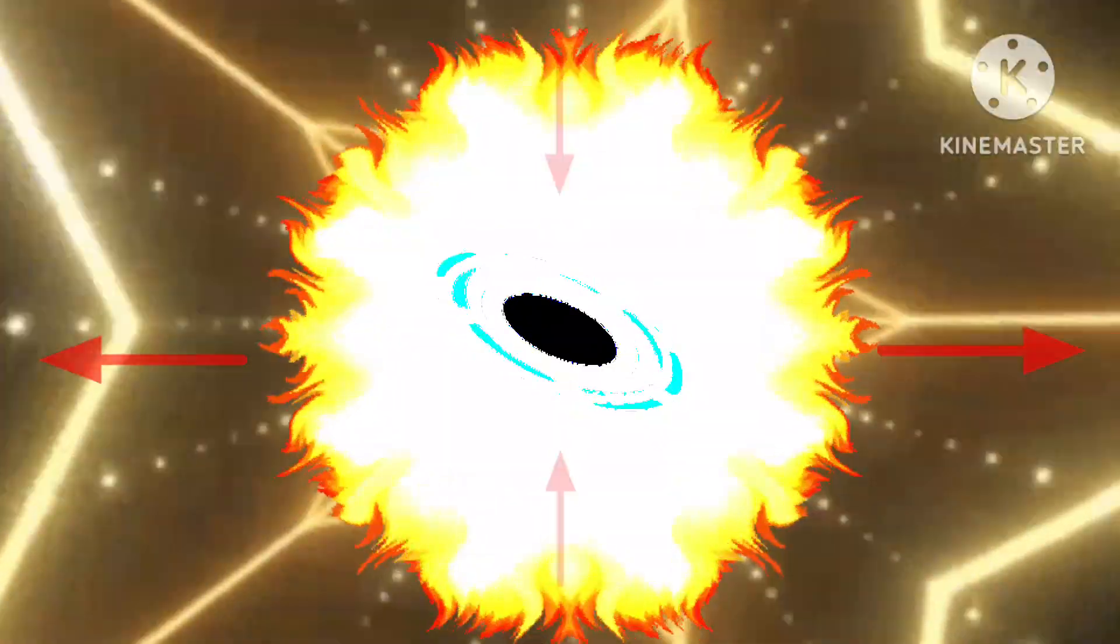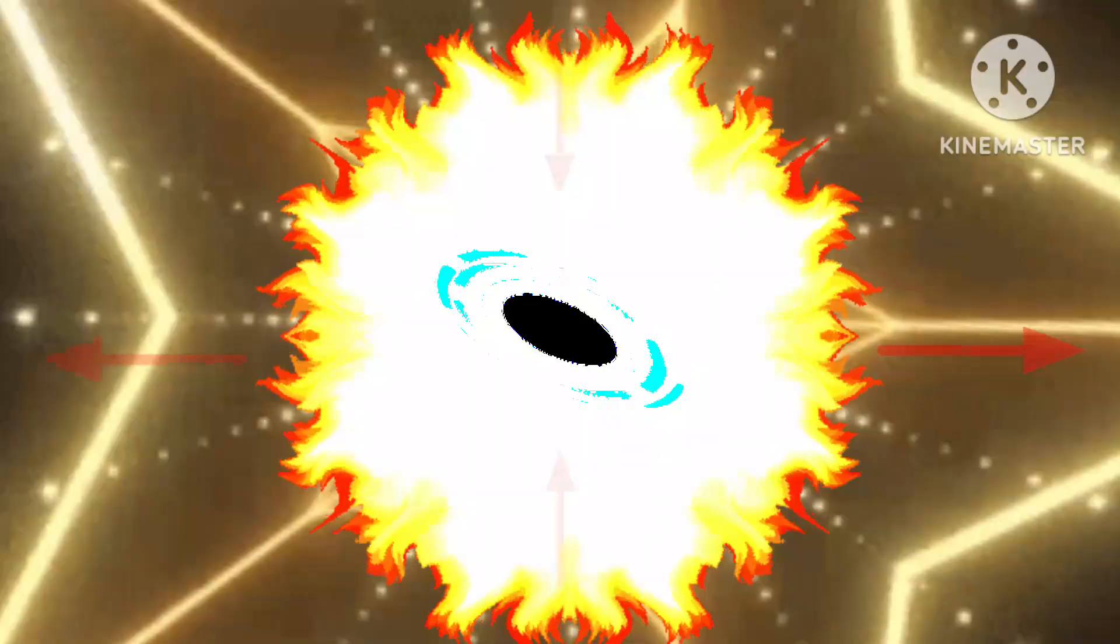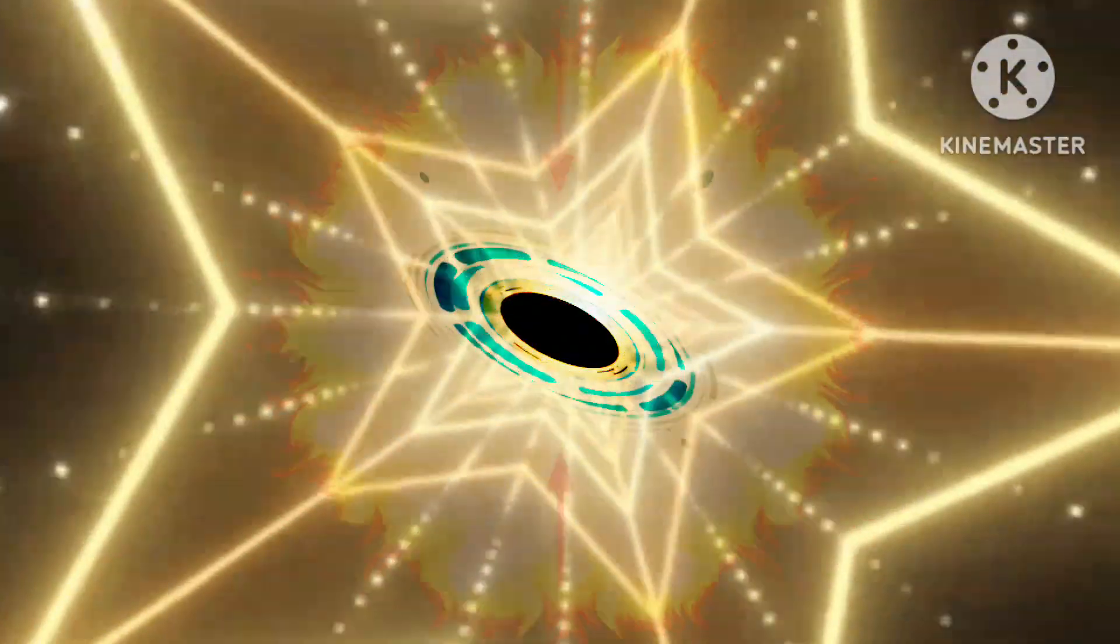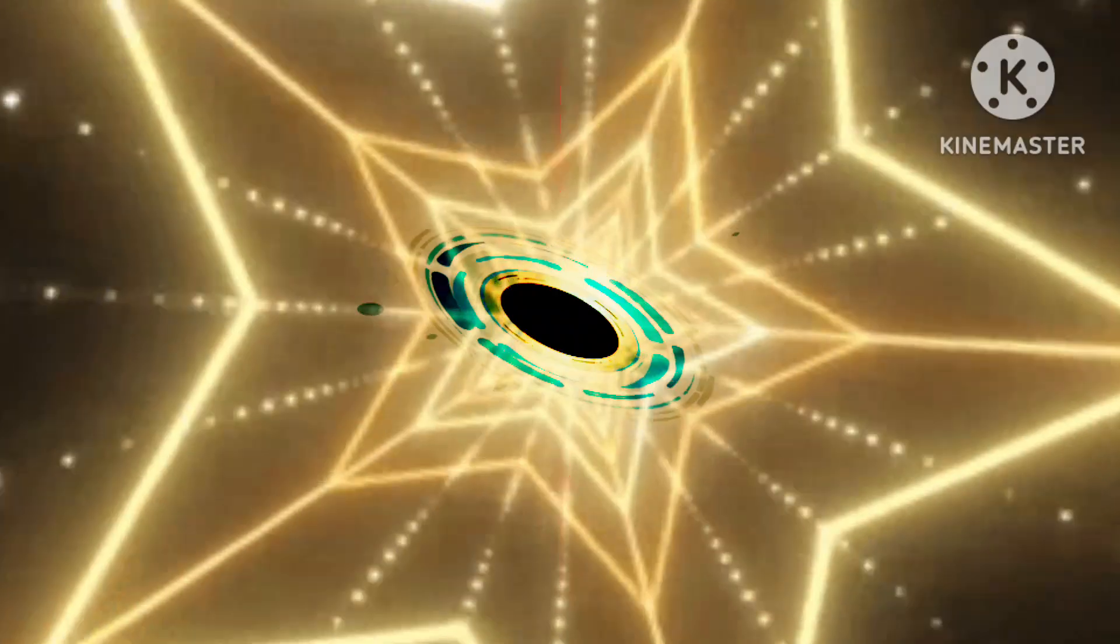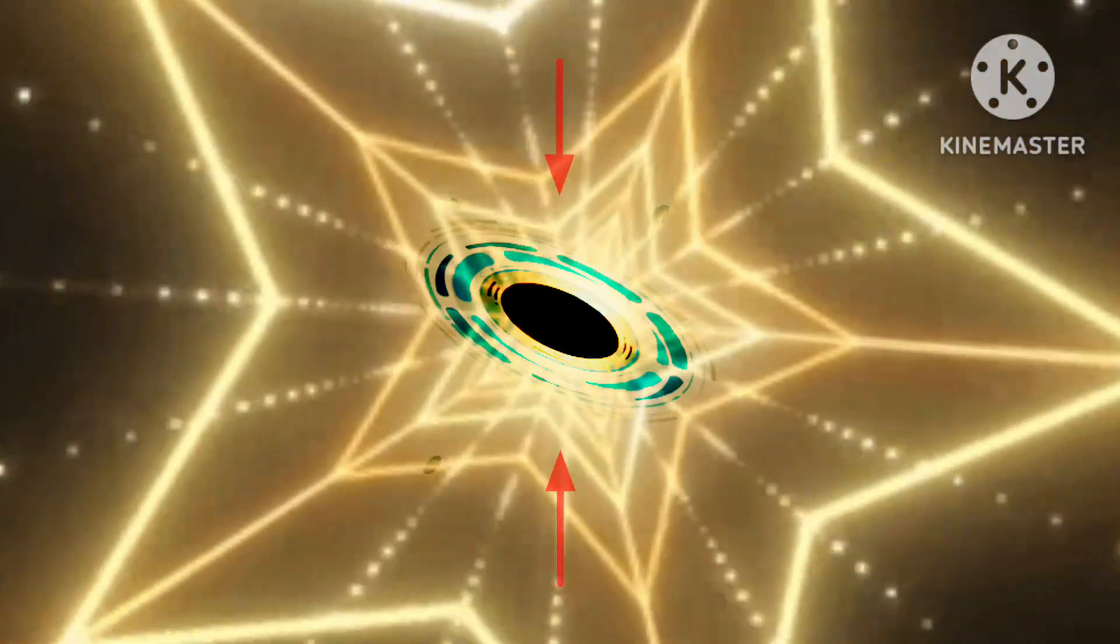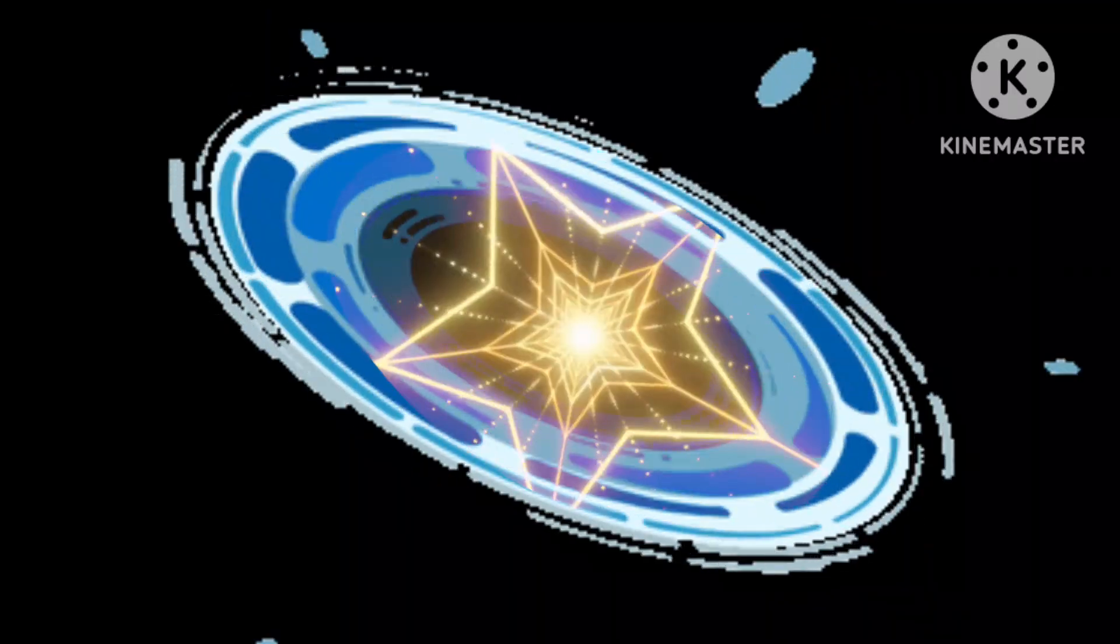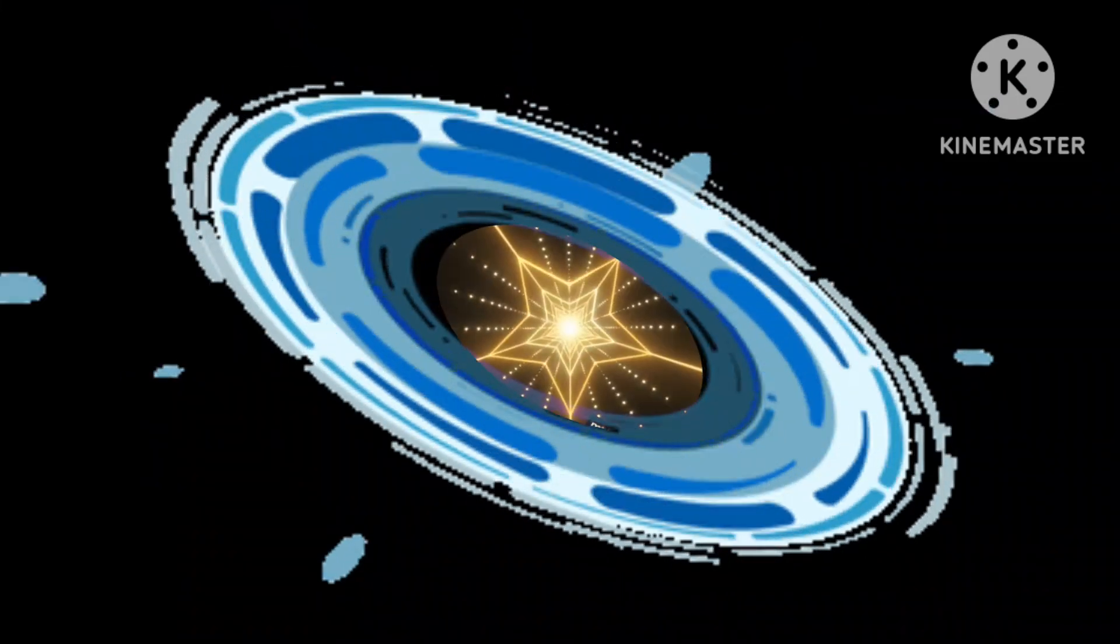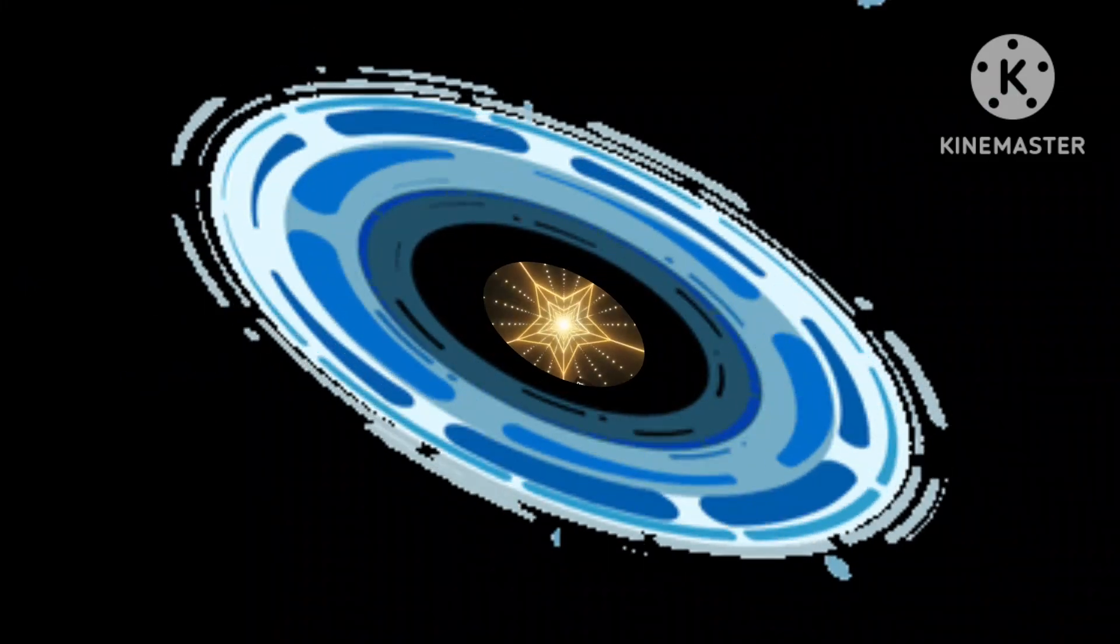When a star runs out of hydrogen, it cannot make the energy that pushes outward, but gravity continues to pull the star in on itself. The gravity crushes the star smaller and smaller, and it becomes a black hole.